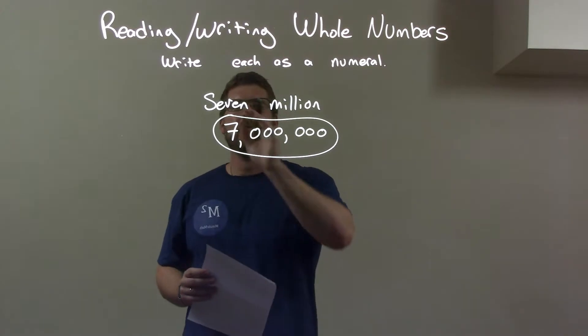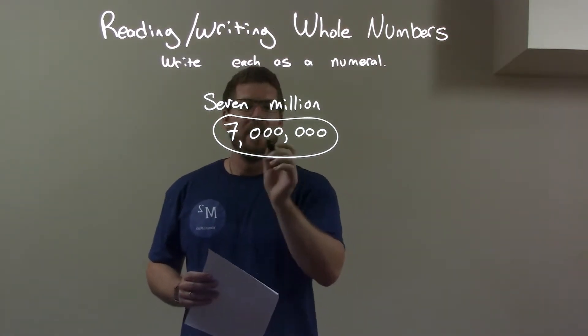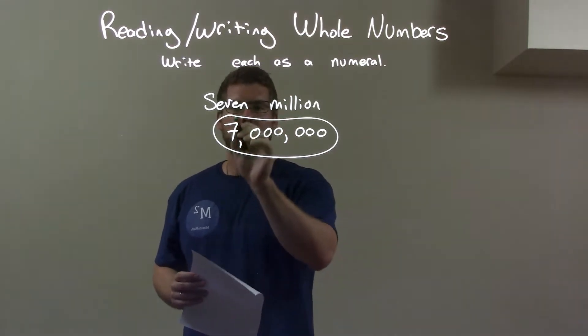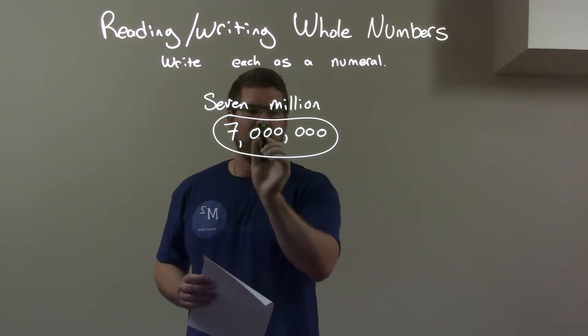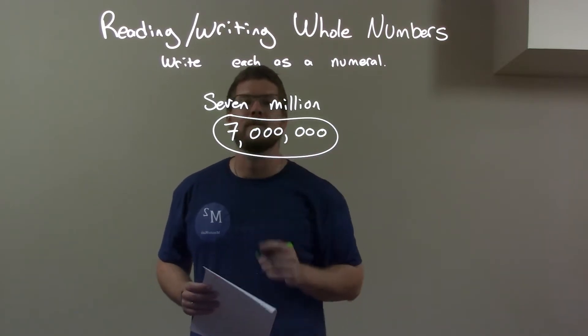So, quick recap. We had to write 7 million out, right? So we put 7 down first, and then it's followed by 6 zeros. So this is the millions place, and then we have the 6 zeros afterwards that show that millions place, but here is our final answer.